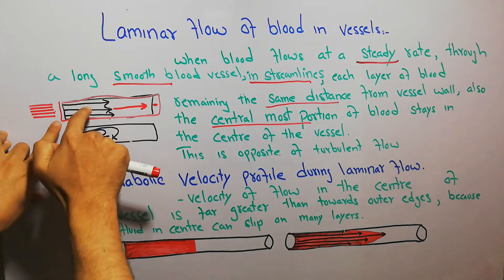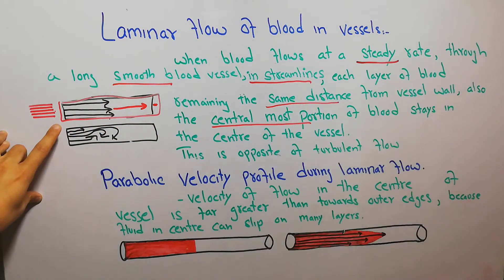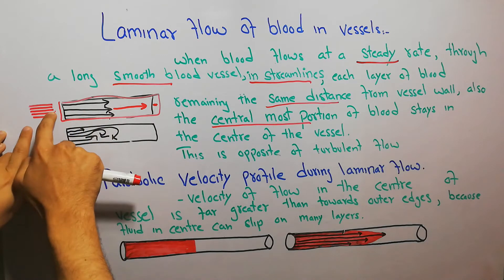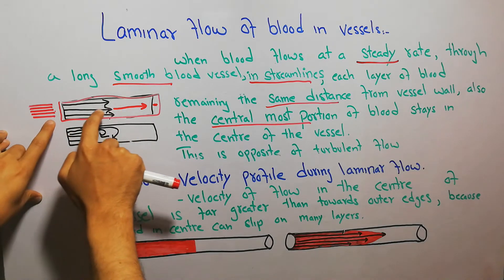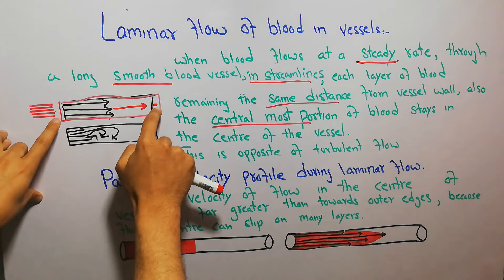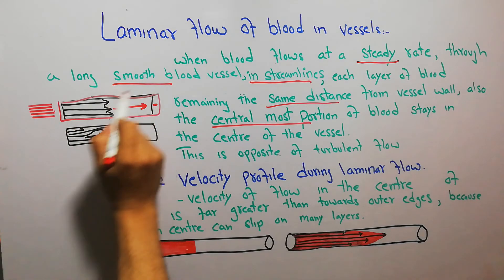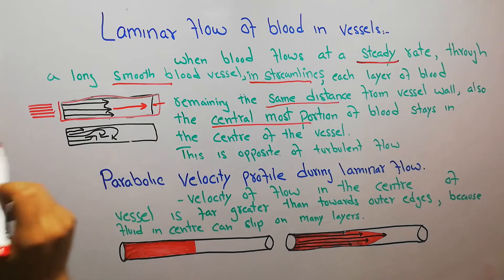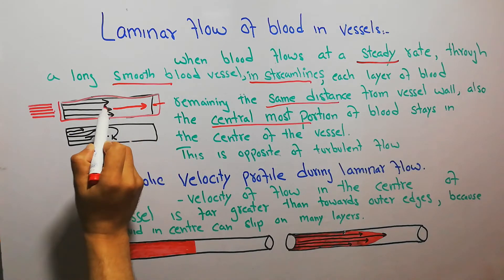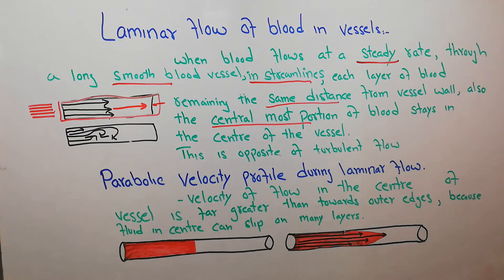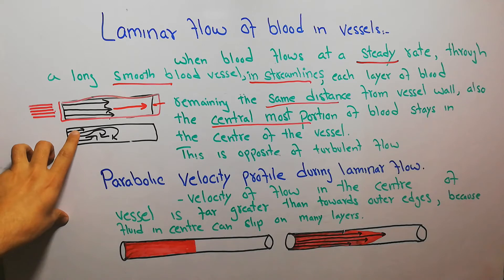Each layer maintains the same distance from the vessel wall. The central layer of blood stays in the center of the vessel. This is the opposite of turbulent flow.